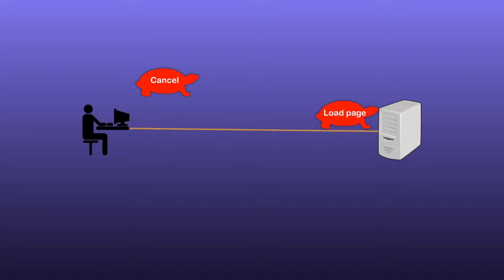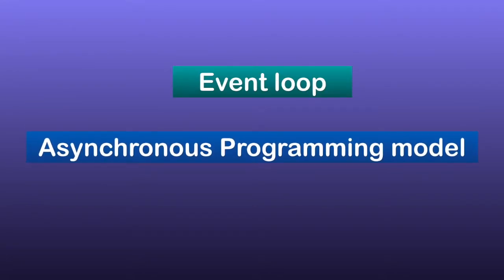Fortunately, this is not how JavaScript engine works. Instead, it uses a mechanism called event loop with asynchronous programming model. Okay, how this event loop works and what is this asynchronous programming model? Let's break this down and first understand how event loop works.